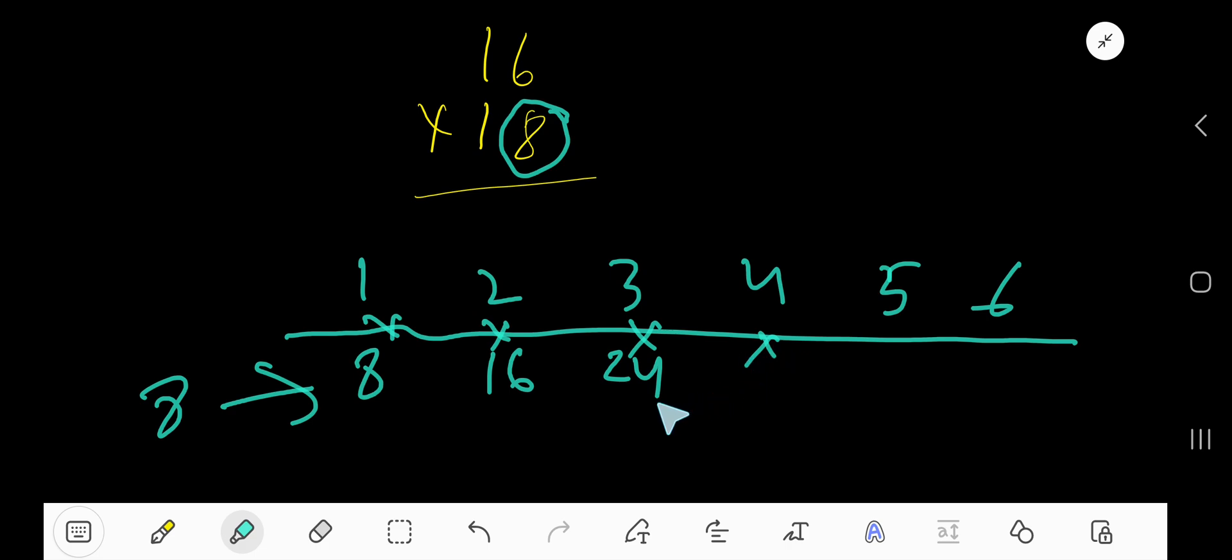8 times 4, 24 plus 8, 32. Just add 8 with the previous step, you will get this 32.